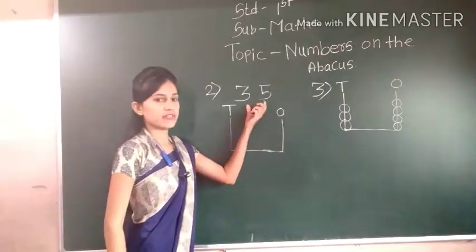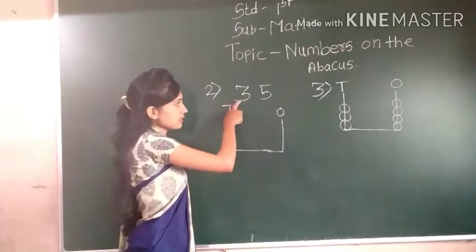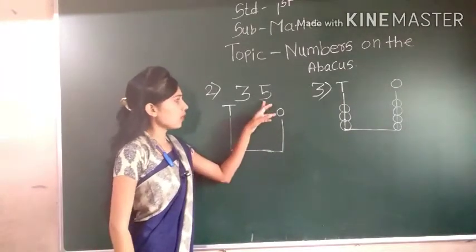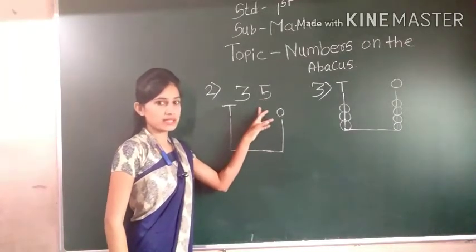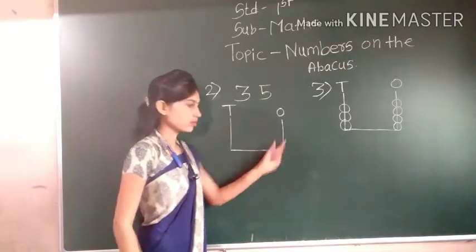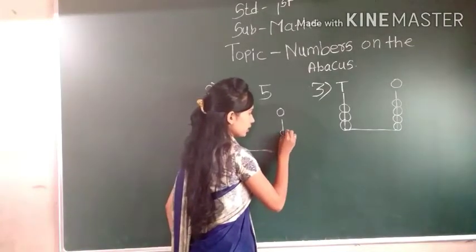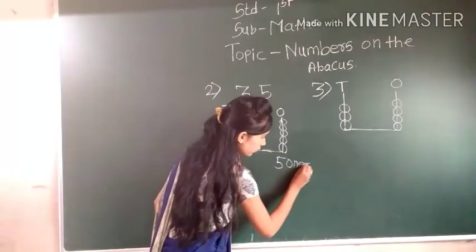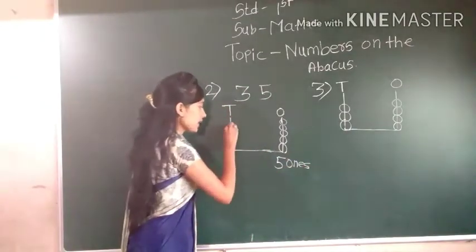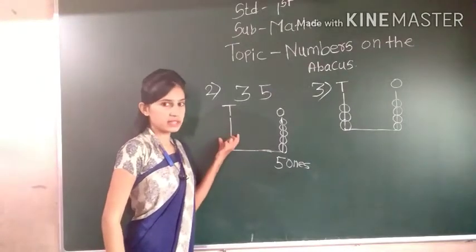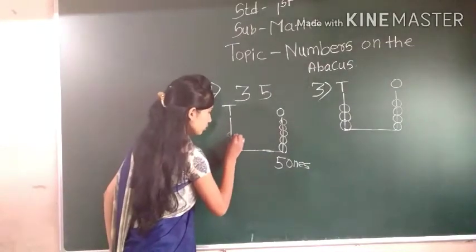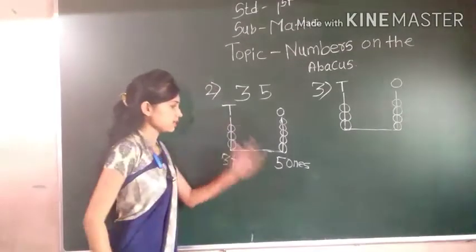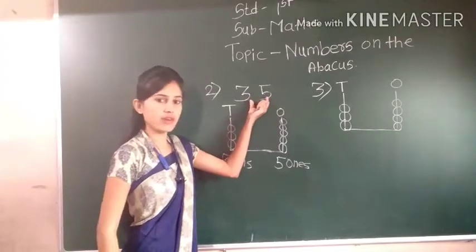Next — thirty-five. Thirty-five: five ones, three tens. So we have to draw bits on one's place and ten's place. Five ones — we have to draw five bits on one's place: one, two, three, four, five. And three tens — we have to draw three bits at ten's place: one, two, three bits. Three tens, five ones. Number four is thirty-five.